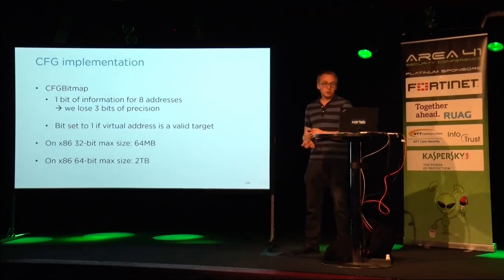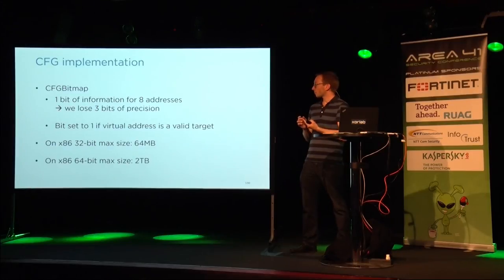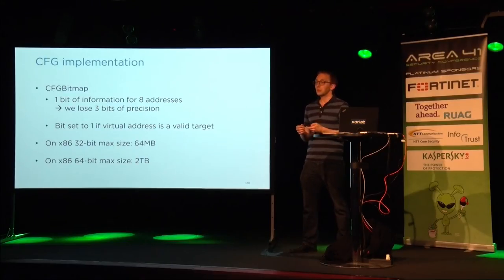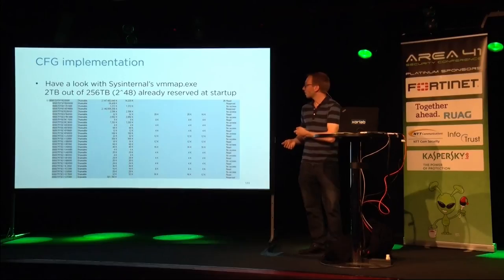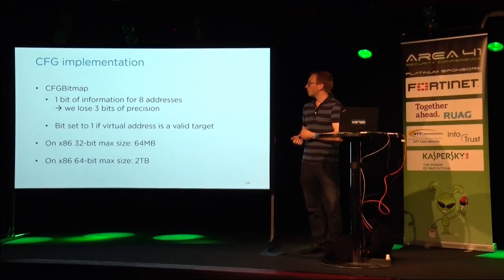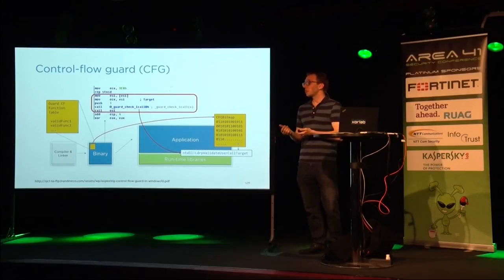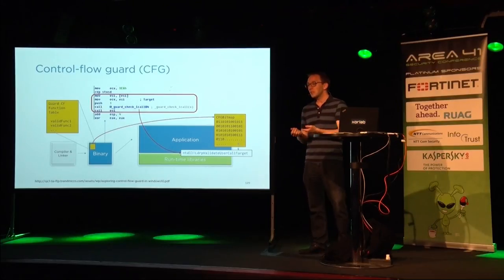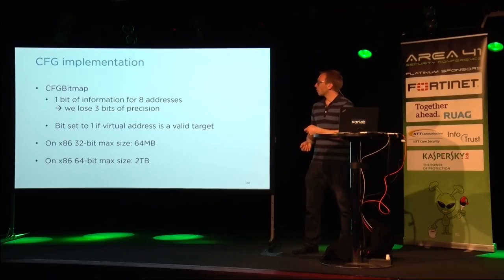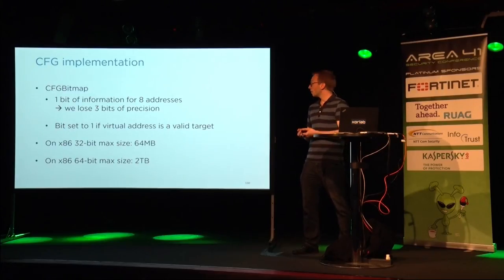About this bitmap: one bit of the CFG bitmap covers eight bytes of addresses in your virtual address space, so some precision is lost. When transitioning from the set of valid functions to the bitmap, the implementation discards the least significant three bits. If a bit in this bitmap is set to one, the address you've checked is a valid indirect control flow target.